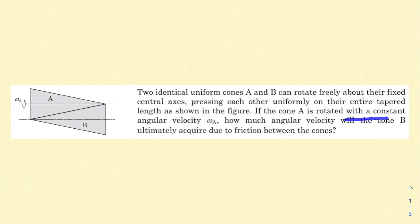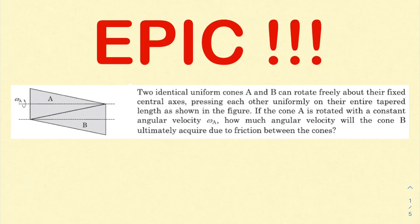If cone A is rotated with a constant angular velocity ω_A, how much angular velocity will cone B ultimately acquire due to friction between the cones? Nice question, and this nice question deserves an epic solution, so let's go.